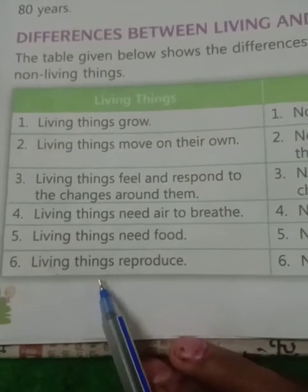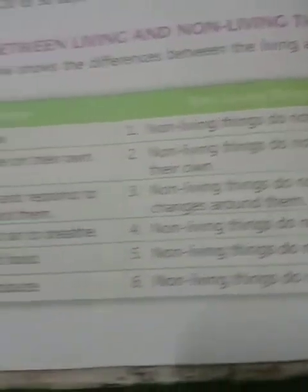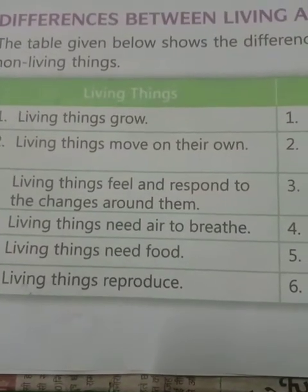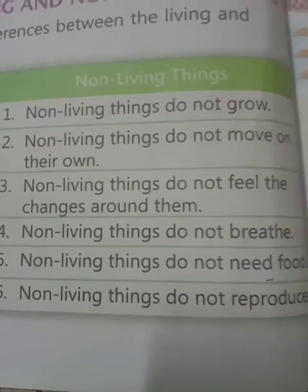Sixth, living things reproduce — they have reproductive capacity. On the other hand, non-living things do not reproduce. Today I have explained the differences between living and non-living things. Hope it is clear. For homework, please read today's topic carefully. Have a nice day. Thank you.